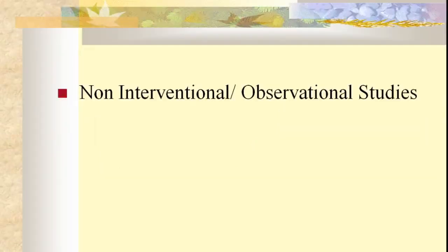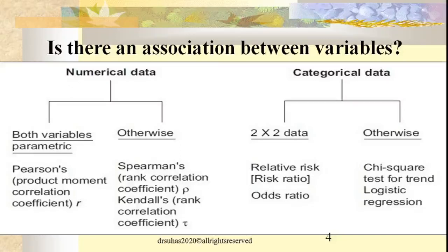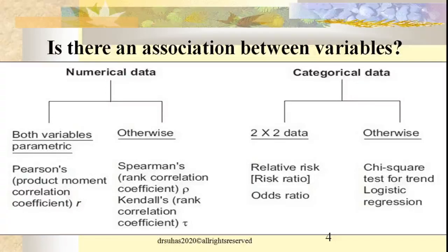Coming to what statistical methods we commonly use for non-interventional or observational studies: if the question is whether there is an association between variables — a cause and effect relationship — and the data is numerical, like age, weight, or height, and both variables are parametric or numerical in nature, then we commonly use Pearson's or Carl Pearson's correlation coefficient, also called the product moment correlation coefficient, generally represented by R. When both data are numerical — like the relationship between age and height or age and weight — we use Carl Pearson's correlation coefficient.